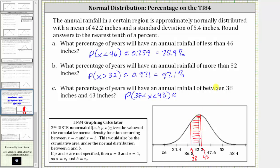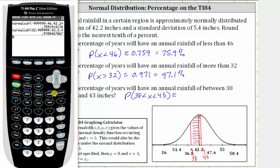So going back to the calculator. Second VARS, number two. The lower bound or left bound is 38. Enter. The upper bound or right bound is 43. Enter.